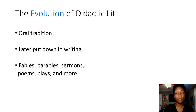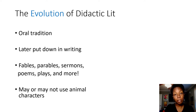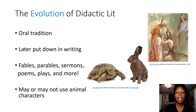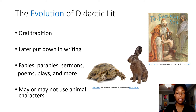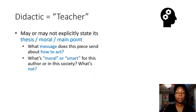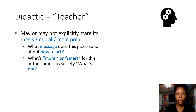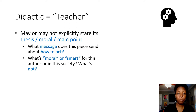Fictional didactic tales like fables may use magical events or animal characters to make a point, but not all the time. For example, Aesop's fable of the tortoise and the hare gives animal characters human personalities in order to make a point. On the other hand, the parable of the prodigal son uses human characters to teach a different point. Most didactic literature explicitly states the thesis, or the main point or moral of the story, somewhere near the end of the text. If it doesn't, try to figure out what lesson each piece is trying to teach.